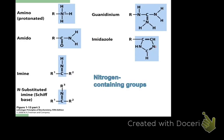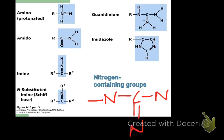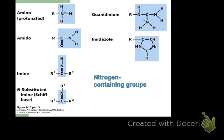Guanidinium looks complex but it's a nitrogen-carbon-nitrogen structure with a double-bonded nitrogen instead of an acyl group. It's a strong base. Arginine has a guanidinium group and usually carries a positive charge. There's resonance between the two terminal nitrogens, making them equivalent, which is why it can easily accept an extra hydrogen — important when learning amino acids.